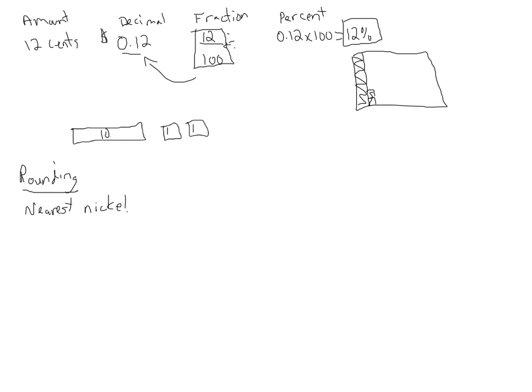Let's have a look at some examples. One dollar and eighty-nine cents. What we need to do is find the nearest five cents that are close to this. When we count by fives, we either end in five or we end in zero: five, ten, fifteen, twenty, twenty-five, thirty, thirty-five, forty, and so on. So we either end in a five or a zero.